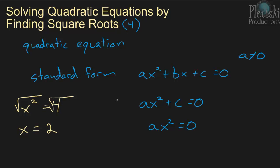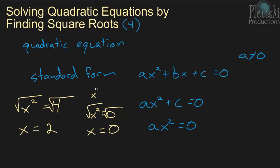Another example: what if x squared equals zero? We take the square root of both sides — the square root of x squared is x, and the square root of zero is zero. So x equals zero. That makes sense: if you put zero in for x in the original equation x squared equals zero, zero times zero is zero.